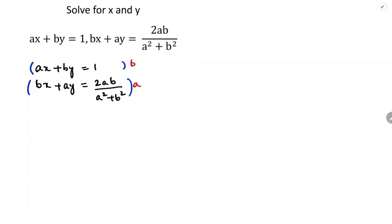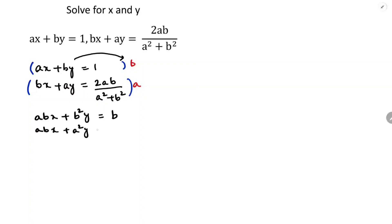Now, multiplying through: a into b gives abx, and b into b gives b square y, equals 1 into b is b. Next, bx into a is abx, plus a into a is a square y, and 2ab into a is 2a square b by a square plus b square.